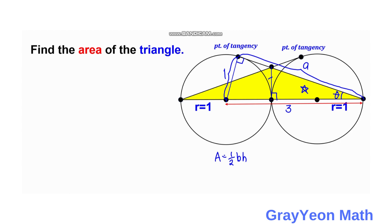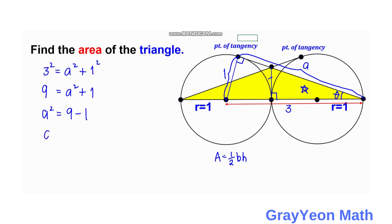By the Pythagorean theorem applied to the larger right triangle, the hypotenuse is 3, so we have 3 squared equals a squared plus 1 squared. That gives 9 equals a squared plus 1, so a squared equals 8. Taking the square root, a equals the square root of 8, which simplifies to 2 times the square root of 2.